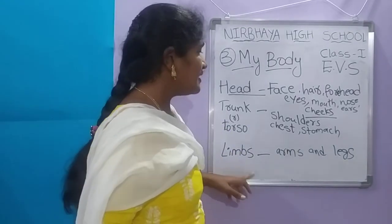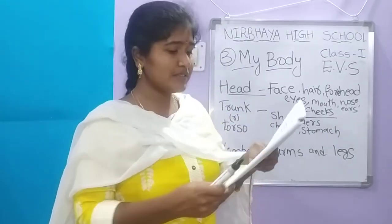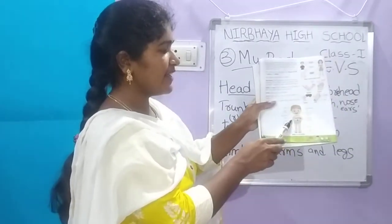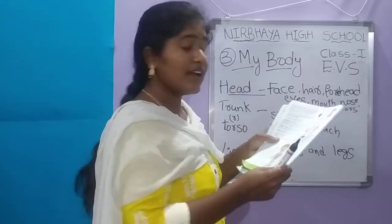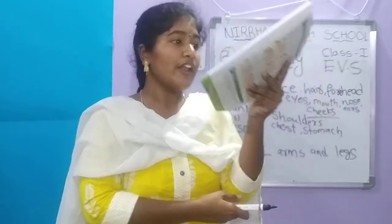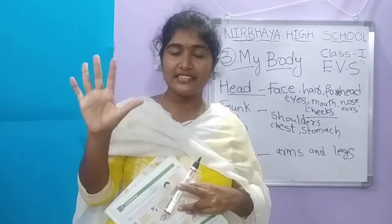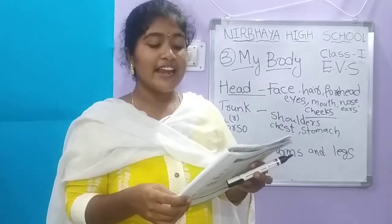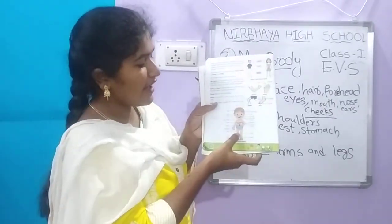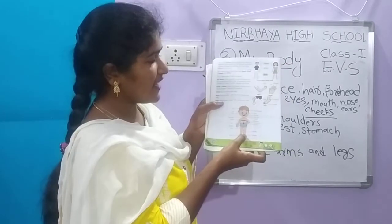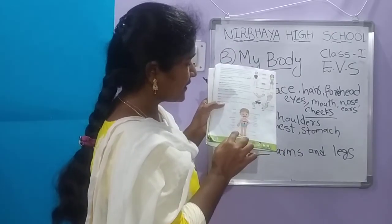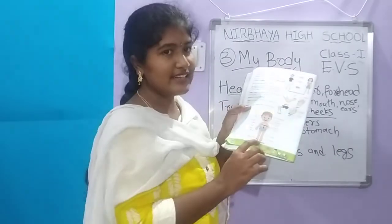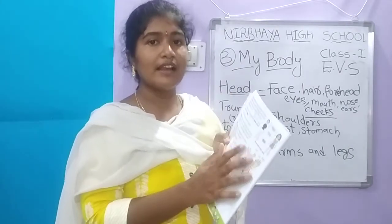Limbs have arms and legs. Arms have elbows, wrists, hands, fingers, and nails. Legs have knees, ankles, feet — F-E-E-T, toes, and nails. These are our total body parts.